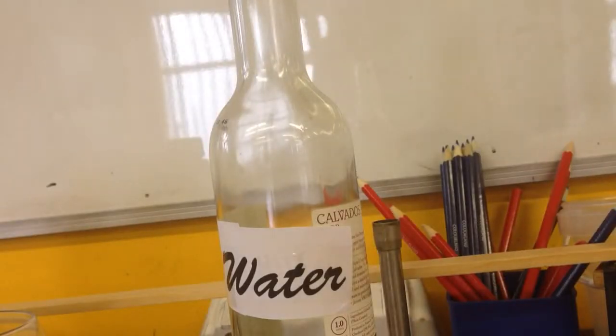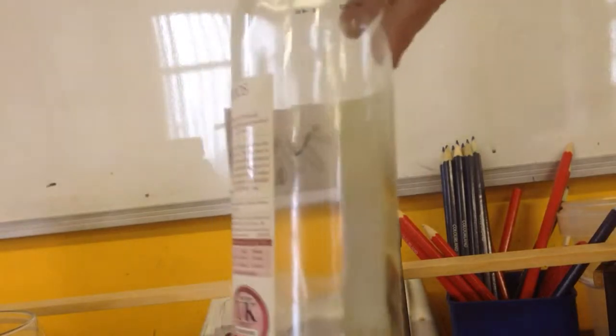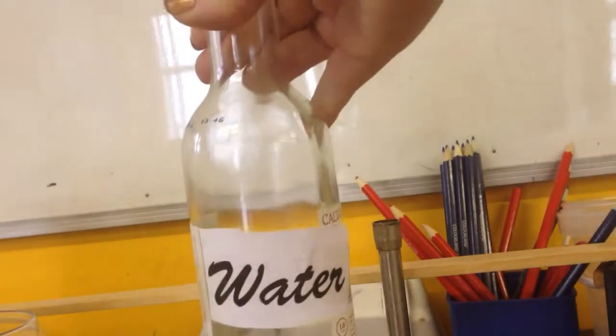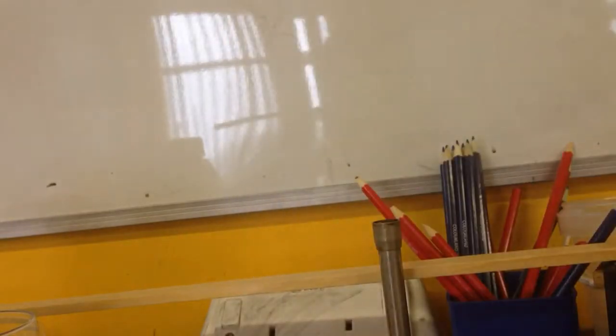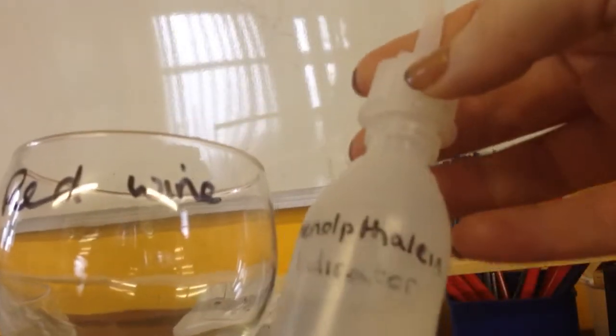So this is the setup for turning water into wine. I have a bottle of wine which is labeled water. This is actually sodium hydroxide in here. My red wine glass is going to be laced with phenylphthalein.